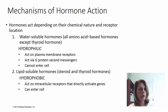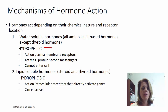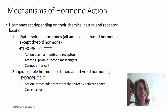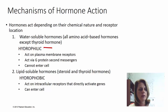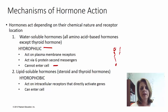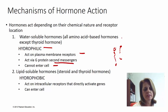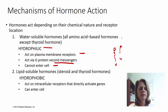How a hormone works depends on its chemistry and where its receptor is. Hormones can be either water-soluble (hydrophilic) — all amino acid-based hormones except thyroid hormone — or lipid-soluble. Because hydrophilic hormones cannot cross the cell membrane's phospholipid bilayer, they bind receptors on the plasma membrane and work by causing something to happen inside the cell using what's called a second messenger system involving a G protein.